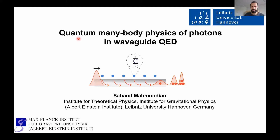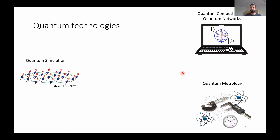I'm talking about quantum many-body physics of photons in waveguide QED. Waveguide QED, as you can see in this diagram, just involves a waveguide with atoms coupled to it. We'll be shining some light into this waveguide and looking at what happens to the photons when they come out — what kind of quantum states of light can we get? Most of us probably work in one of the areas of quantum technologies: quantum simulation, quantum computing, quantum networks, and quantum metrology.